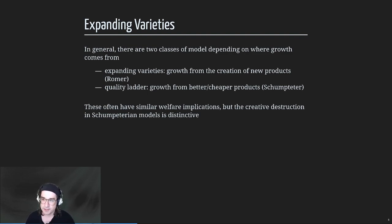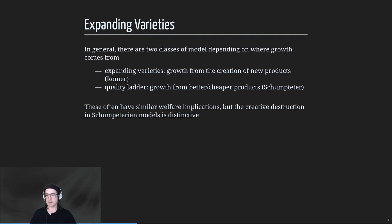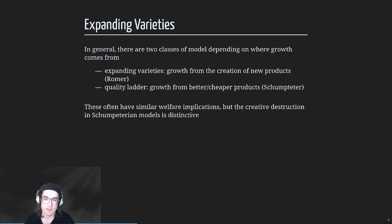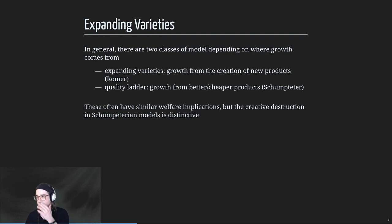Sometimes I'll call that Schumpeterian, after Joseph Schumpeter. Romer is a real modern person - alive, on Twitter, and has a Nobel prize. He's also been really into COVID testing lately. Schumpeter is not with us anymore - he's probably a hundred-plus years ago, so he's more of a historical figure, but pretty influential as an economist, though he was probably called a political economist.